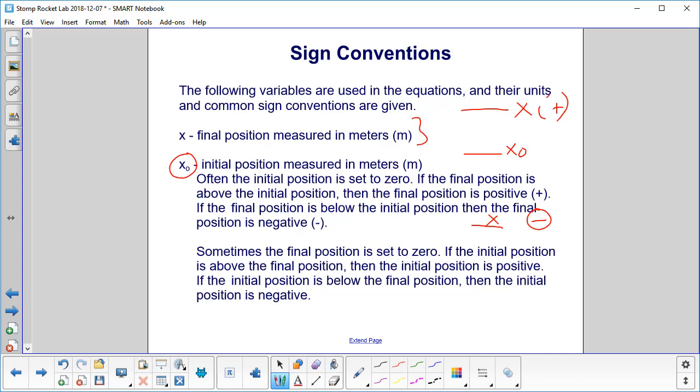Sometimes the final position is set to zero. If the initial position is above that, then the initial position is positive. If the initial position is below it, then the initial position is negative.